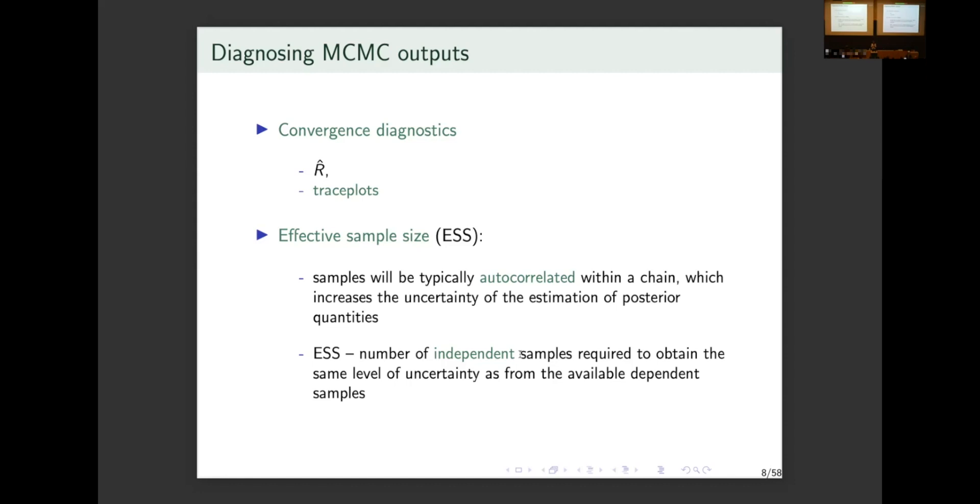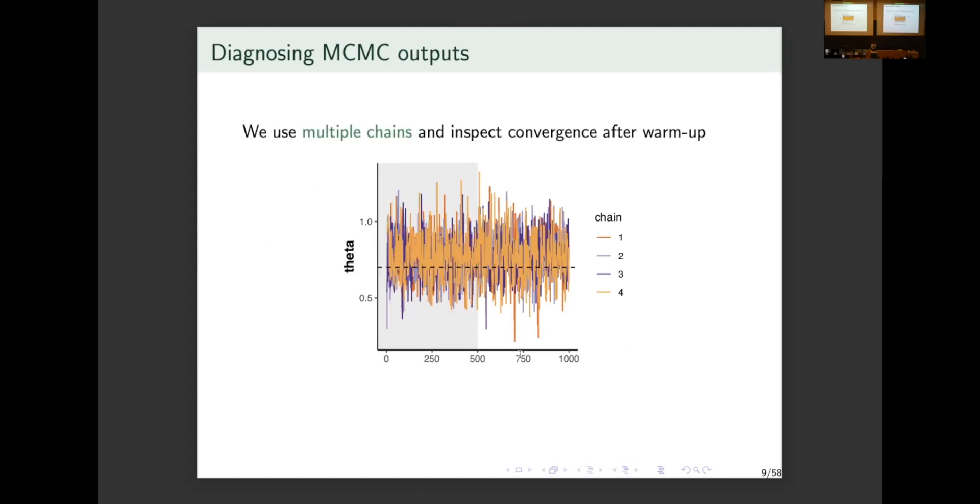Then, effective sample size is another important quantity for us to look at. But the MCMC samples normally would be auto-correlated. So, each sample is not exactly independent from the previous sample. And effective sample size is the estimate of how many independent draws we would need to get the same level of variation in the chain as we got given the dependent samples.